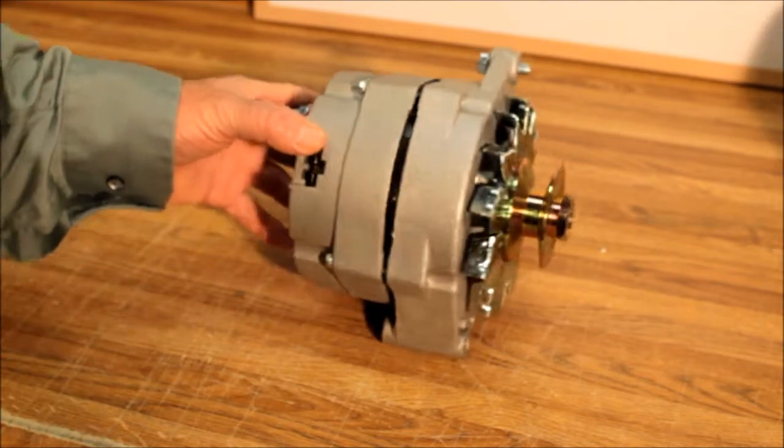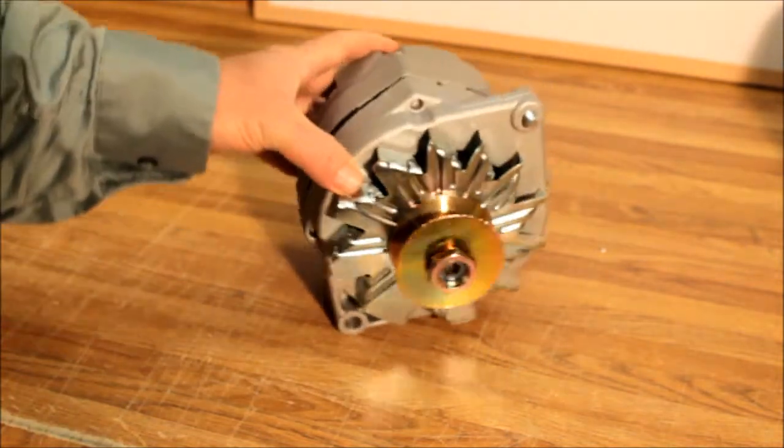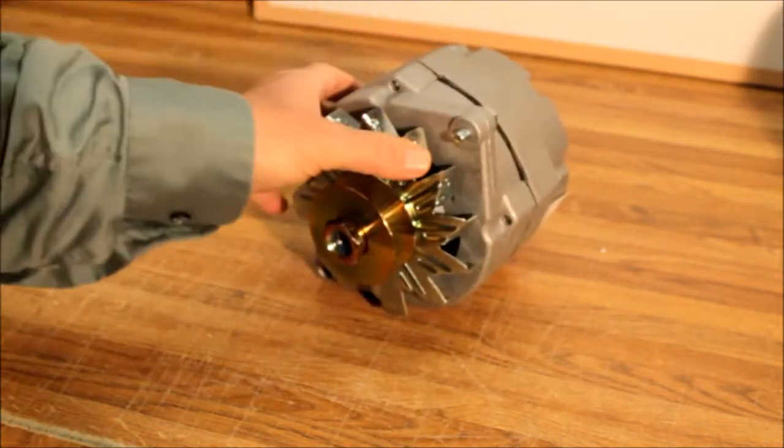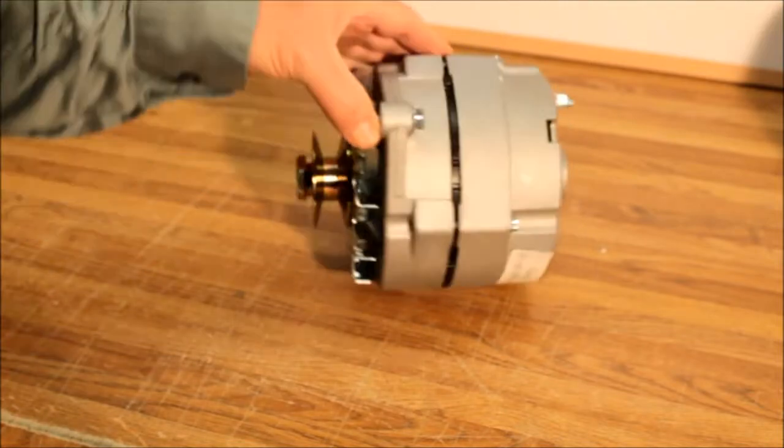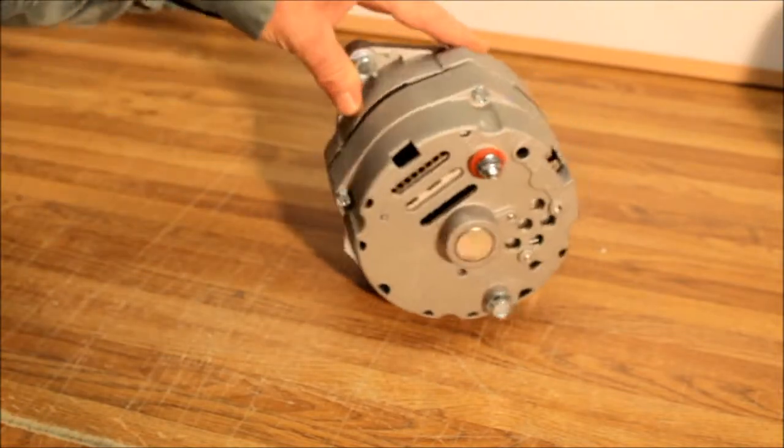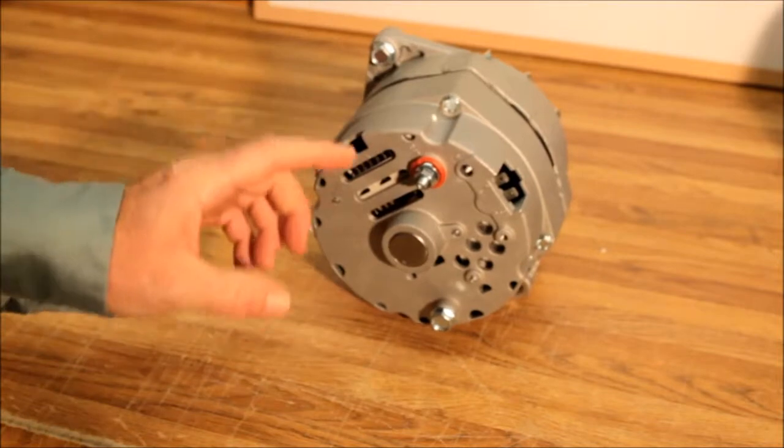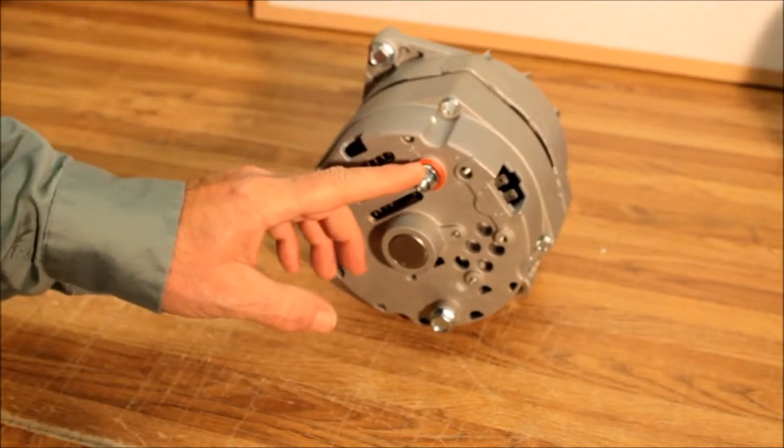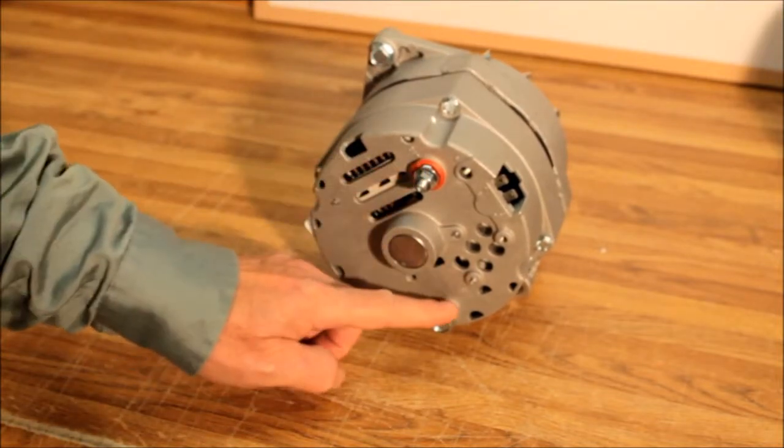Alternator man here. What we have is the 8-volt positive ground 10si series alternator. This is an 8-volt setup positive ground, which means that you put your negative battery post here, then your positive is going to go to the base.